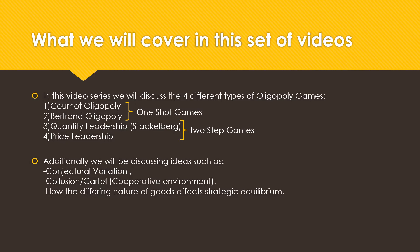Additionally, we will be discussing ideas such as conjectural variation, the concept of collusion or cartel behavior, and how differing the nature of the goods in question can affect strategic equilibrium.